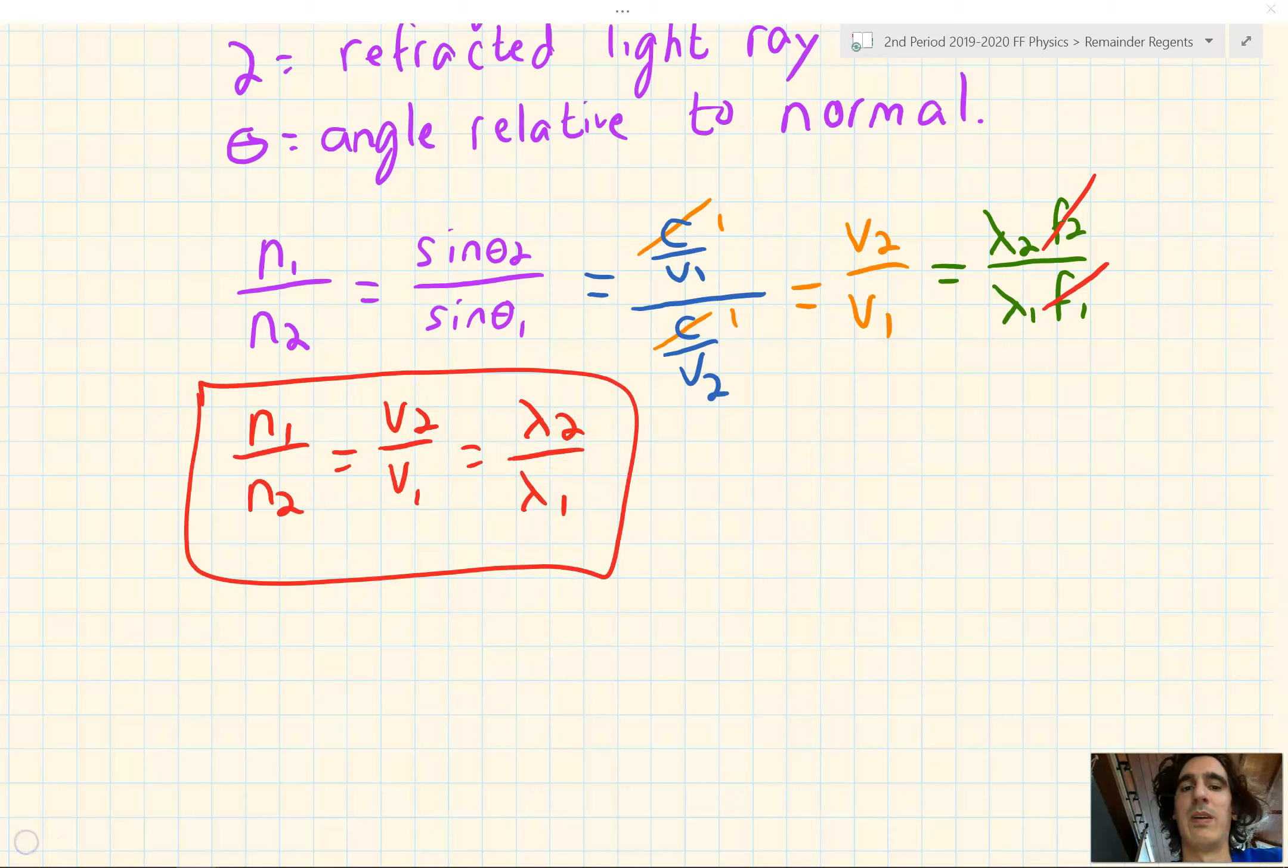The first one we'll do is number 4 from your reflection refraction homework. Number 4 says find the angle of refraction of a ray of light passing from air into water at an incident angle of 30 degrees. Let's sketch your results. Let's sketch and label our picture first.